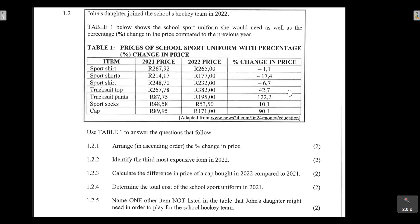For example, the sports shirt was R267.92 in 2021, and in 2022 the price decreased — the percentage change is negative 1.1, where the negative shows it decreased by 1.1%. The sports shorts went from R214.17 in 2021 to R177 in 2022, a decrease of 17.4%. The sports skirt was R248.70 in 2021 and R232 in 2022, a decrease of 6.7%.